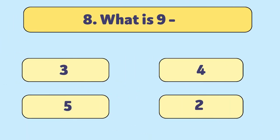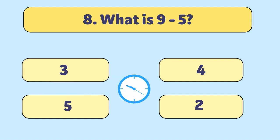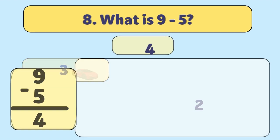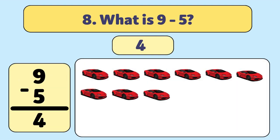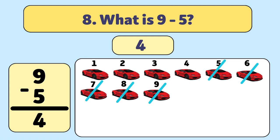What is nine minus five? The answer is four. We start with nine cars and take away five. Let's count. One, two, three, four, five. We have four cars now.